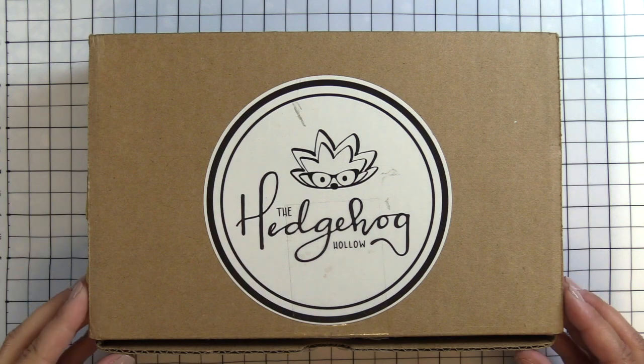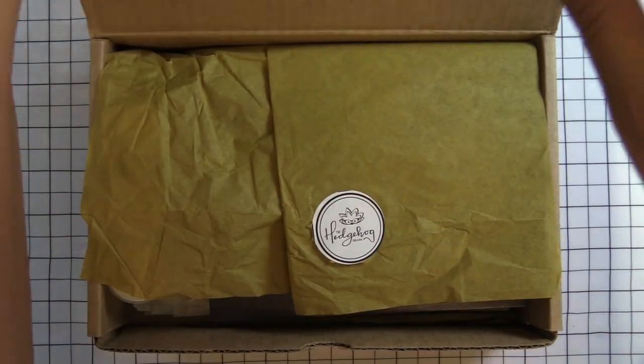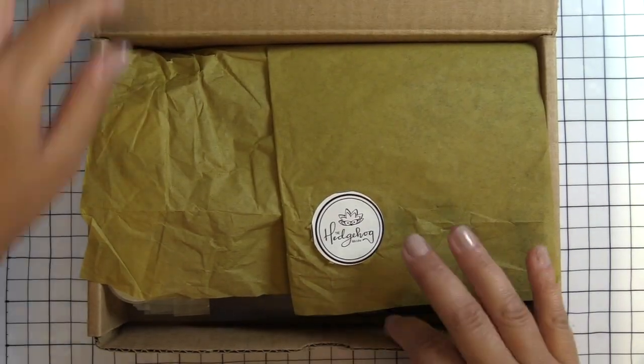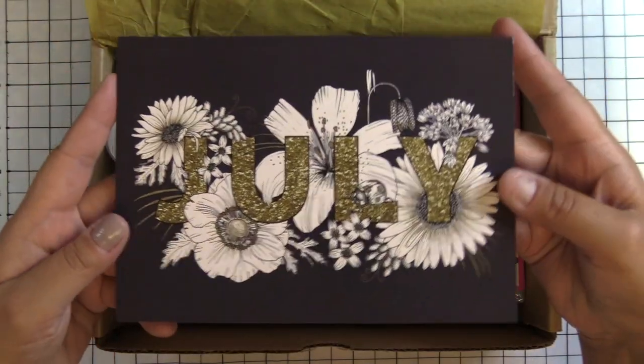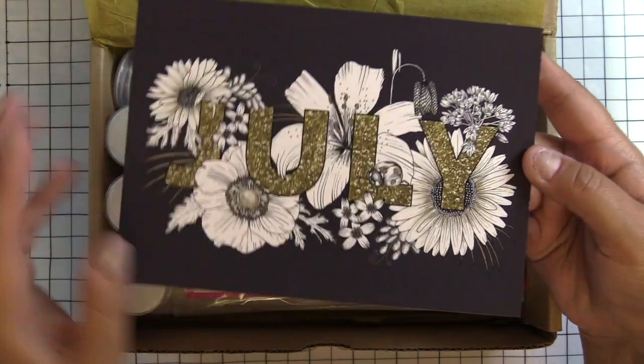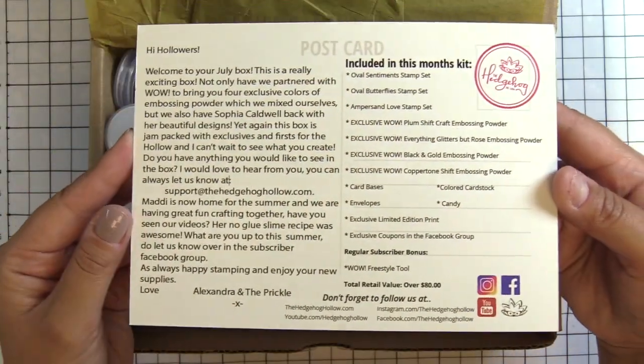Let's take a closer look at the Hedgehog Hollow July 2019 kit. Inside you have a limited edition print from Sophia Caldwell and on the back it lists all of the supplies in the box as well as a note from Alexandra from the Hedgehog Hollow.